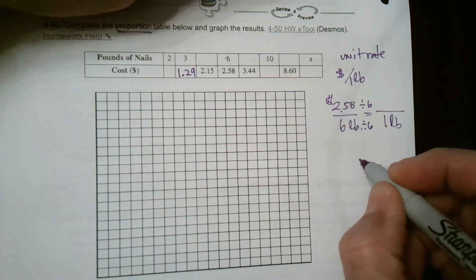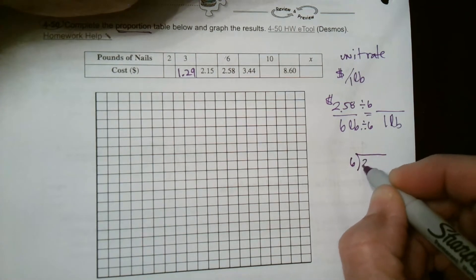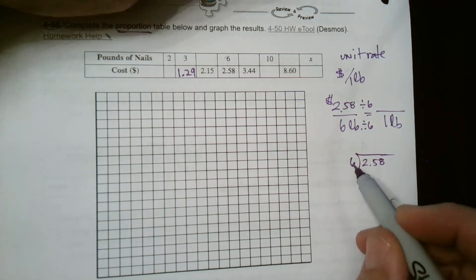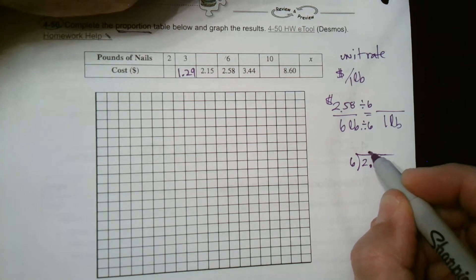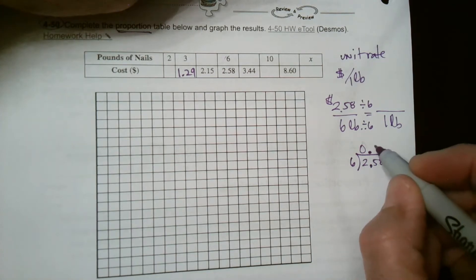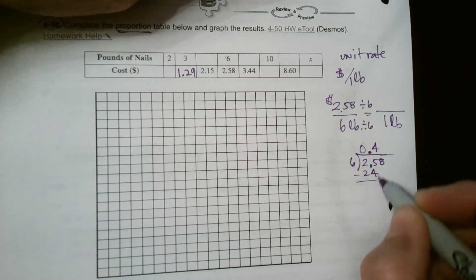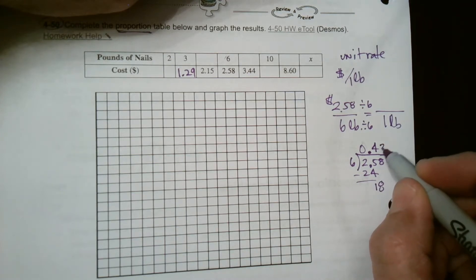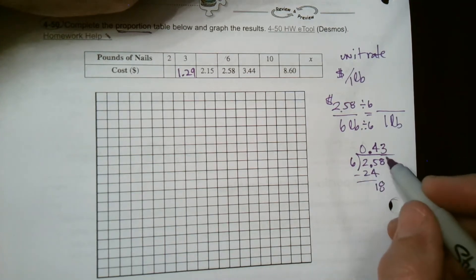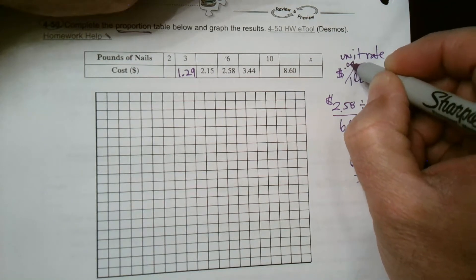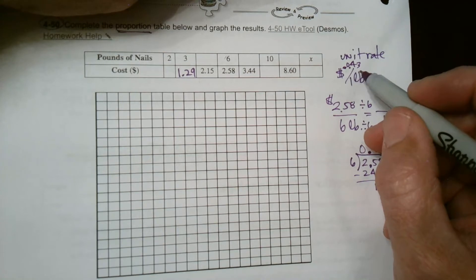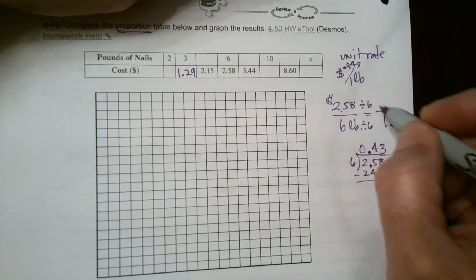What is $2.58 divided by six? If you need practice on dividing using the long division algorithm, here we go. Six goes into two zero times. Six goes into 25 four times, multiply, you get 24, subtract, bring down the eight. Six goes into 18 three times. So 43 cents. My unit rate is 43 cents per pound.